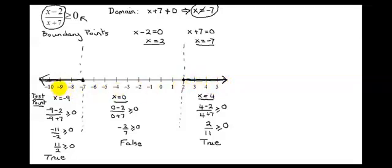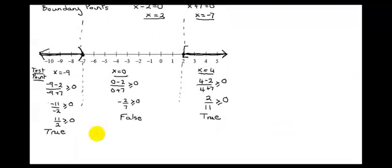Now I need to decide what to put on the endpoints — square brackets or parentheses. If you look at the original inequality, it looks like I need square brackets on my endpoints. But remember, we needed to make sure we didn't include negative 7 in our solution, so I cannot put a square bracket on negative 7 — I have to use a parenthesis. There's no problem with the 2, so I can put a square bracket there. In interval notation, the solution set is negative infinity to negative 7 with a parenthesis on negative 7, unioned with square bracket positive 2 to infinity.